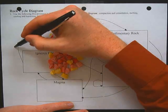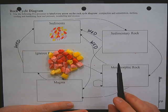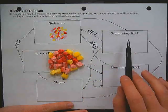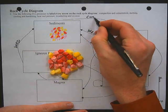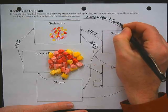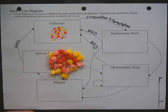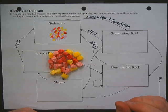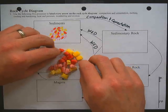Now, in order to make a sedimentary rock, those sediments have to go through compaction and cementation. Layers of sediment stack up on top of each other, putting more and more pressure and weight down to compact them together. Then the minerals dissolve and crystallize, which forms our sedimentary rock.